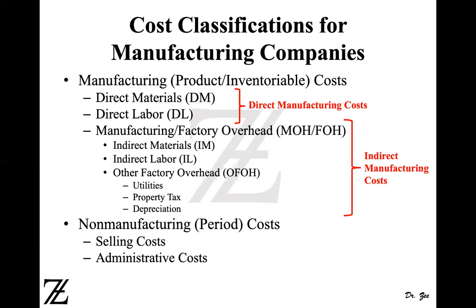In manufacturing companies, when you manufacture a product, the cost you incur to make that product is known as manufacturing cost. You can also call it product cost or inventoriable cost, because it goes into the balance sheet as inventory. Manufacturing costs, product costs, and inventoriable costs are the same thing. Manufacturing costs consist of direct material, direct labor, and manufacturing overhead.